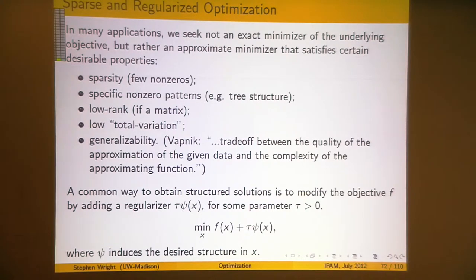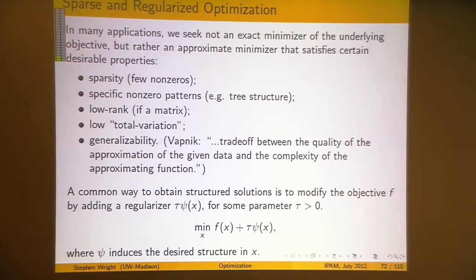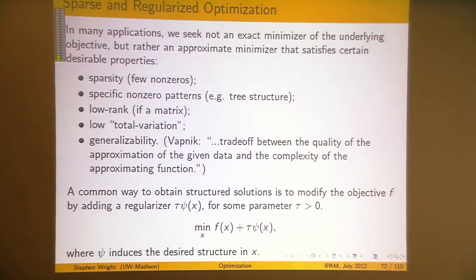One way to achieve a structured solution is to modify the objective by adding a regularization term τ·ψ(x), where ψ is chosen to induce the kind of structure you're looking for. The challenge is how to pick ψ to match different goals. The parameter τ is a scalar: generally the bigger you make τ, the more emphasis you place on getting a structured solution. For example, if ψ is an L1 norm — which tends to induce sparsity — the bigger τ is, the sparser the solution will be, because you're placing more emphasis on reducing the number of non-zeros.